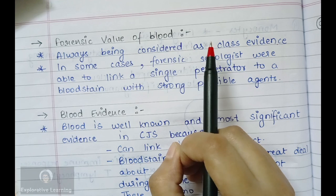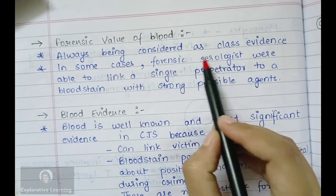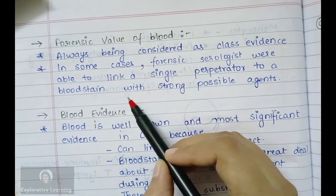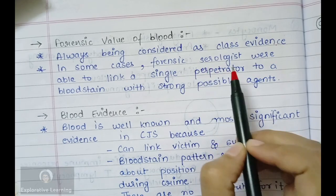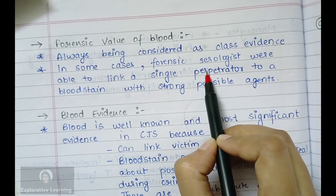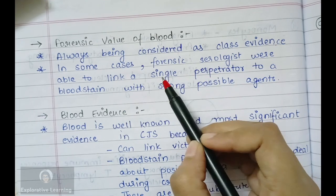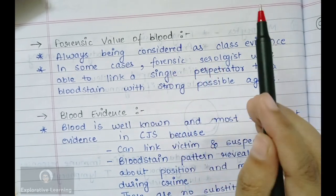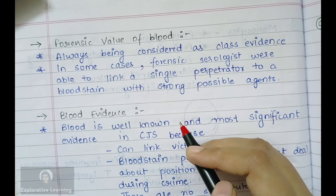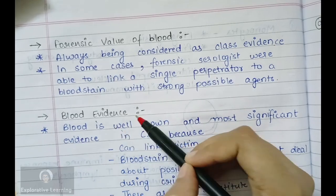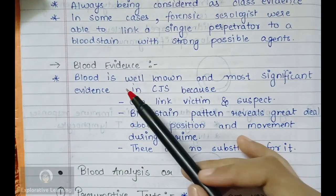In some cases, forensic serologists were able to link a single perpetrator to a blood stain. A single individual perpetrator could be identified if you know the blood group — whether it is Rh positive or Rh negative. How to find this out and how these things are helpful in identification of a perpetrator will be discussed later in this lecture.